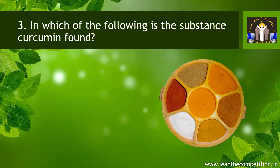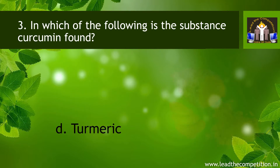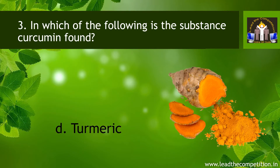Question number 3. In which of the following is the substance curcumin found? A. Chilli. B. Coriander. C. Salt. D. Turmeric. The answer is D. Turmeric.